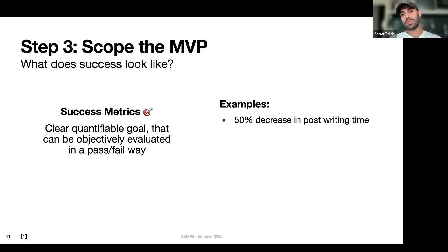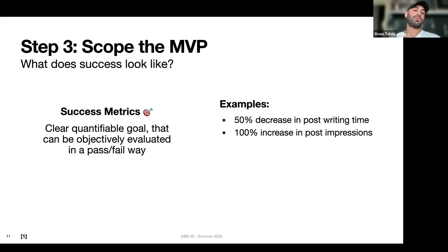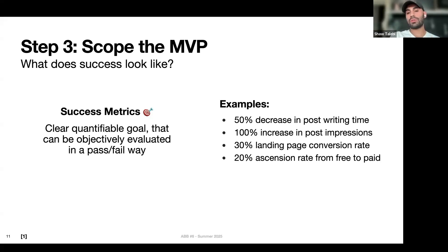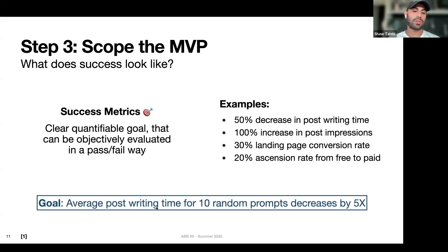Some examples: a 50% decrease in post writing time, or a 100% increase in post impressions — this indirectly solves the problem because if you're getting double the impressions, you can write half as many posts and get double the impact in the same amount of time. These first two are more like technical success metrics. Then there are business metrics: 30% of people who visit your landing page will sign up, or 20% of free users ascend to paid users. For this project, let's say the goal is: average post writing time for 10 random prompts is decreased by 5x — so if it typically takes 30 minutes, success is bringing that down to five or six minutes.